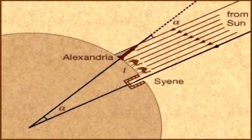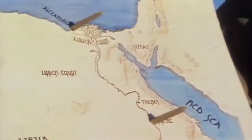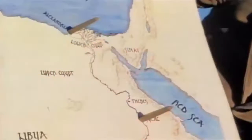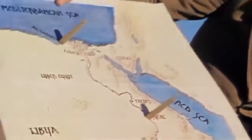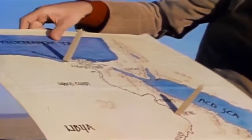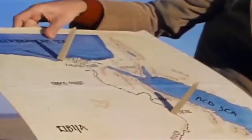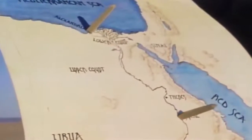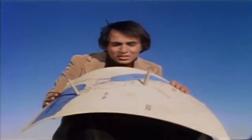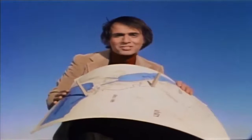Eratosthenes, Carl Sagan, and other globe proponents reason that this result is impossible on a flat earth. To quote Carl Sagan: 'If at a certain moment each stick casts no shadow at all, that is perfectly easy to understand, provided the earth is flat. If the shadow at Sien is a certain length and the shadow at Alexandria is the same length, that also makes sense on a flat earth. But how could it be, Eratosthenes asked, that at the same instant there was no shadow at Sien and a very substantial shadow at Alexandria? The only answer, he claimed, was that the surface of the earth is curved.'